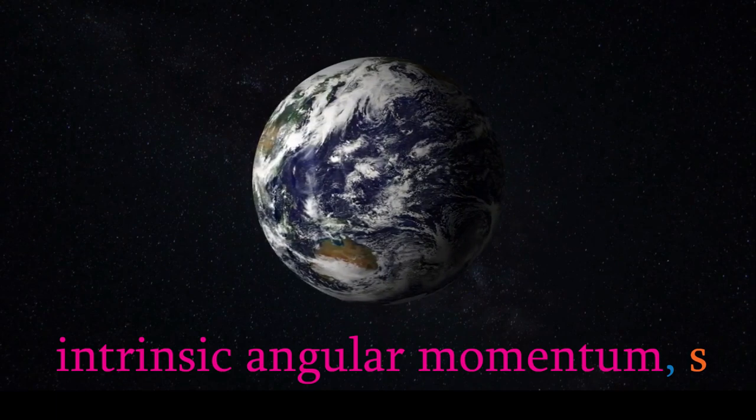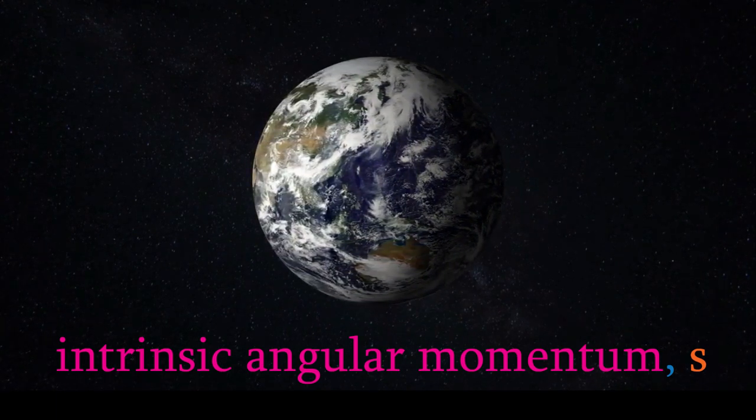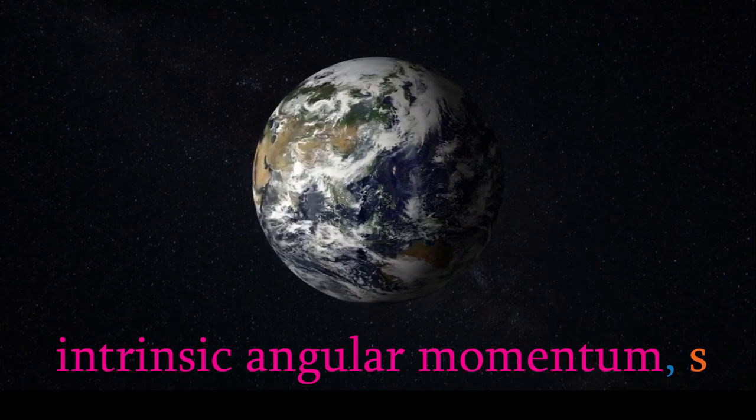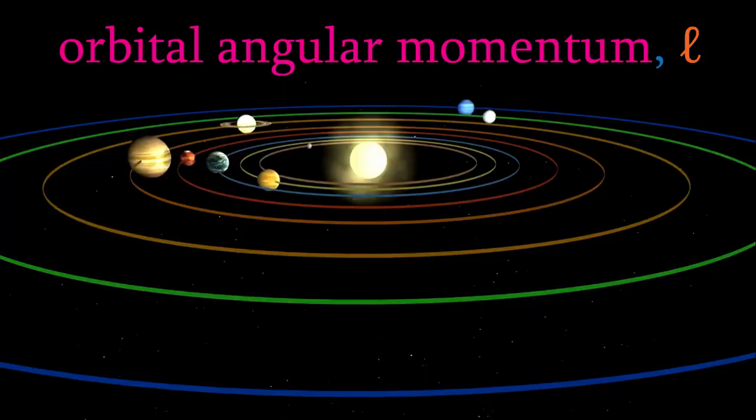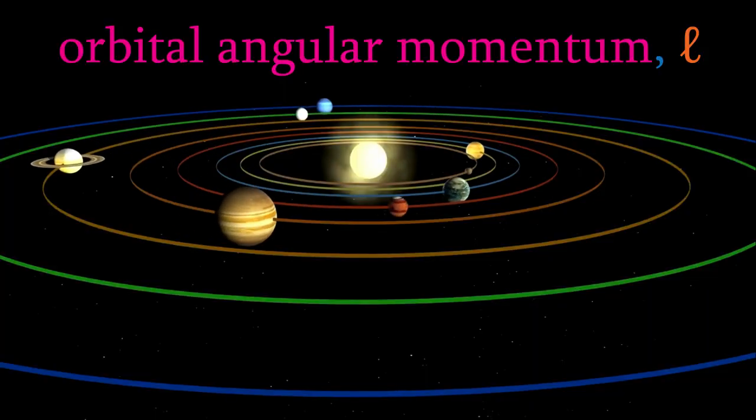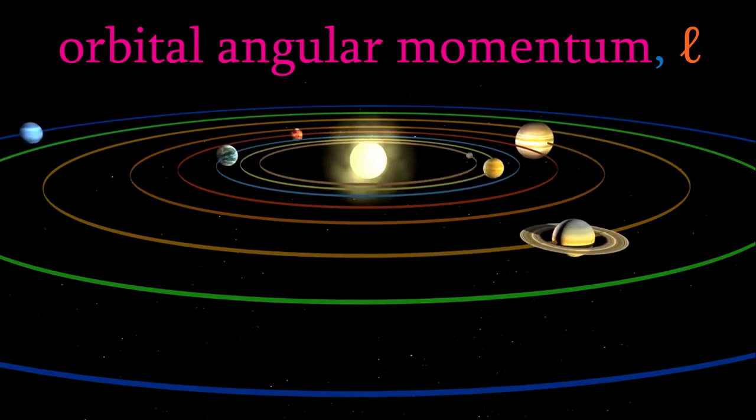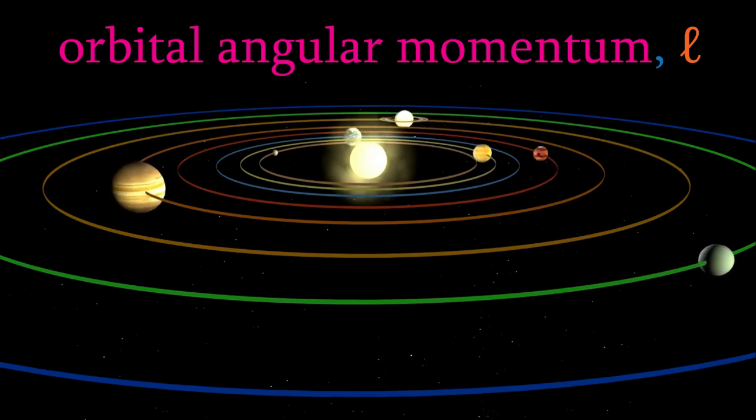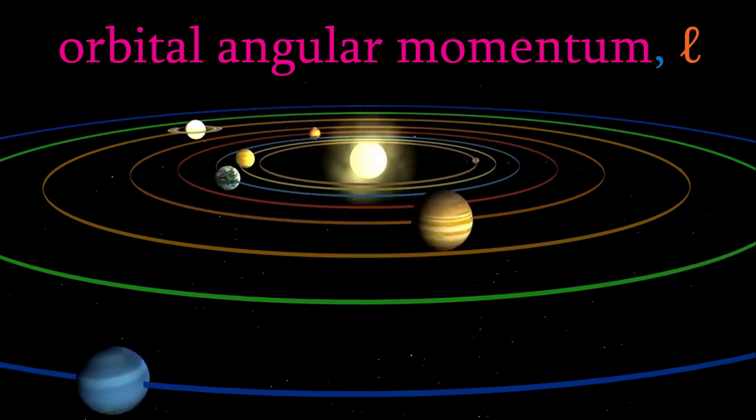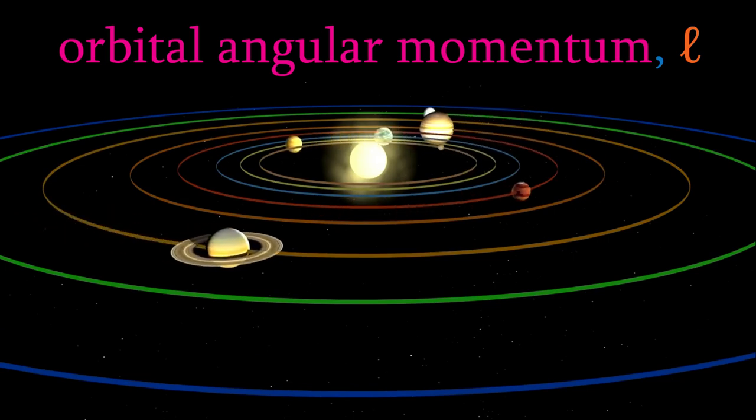In addition to intrinsic angular momentum, electrons also have what's called an orbital angular momentum, and that's what's represented by the quantum number l. Again, this is similar to the angular momentum of the earth. The earth has an orbital angular momentum resulting from its motion as it orbits the sun. So, just as the earth has both orbital and intrinsic angular momentum, so does an electron.